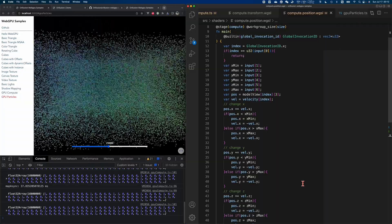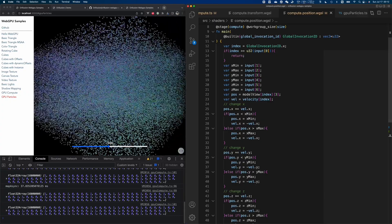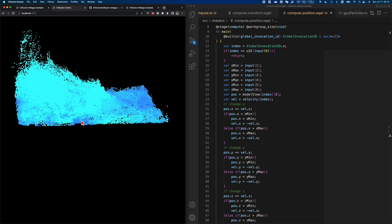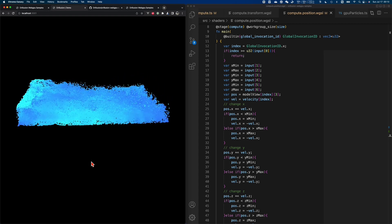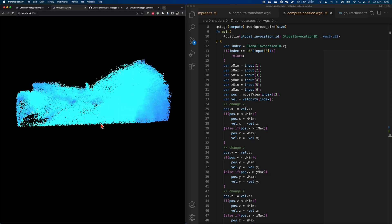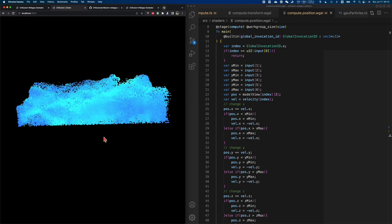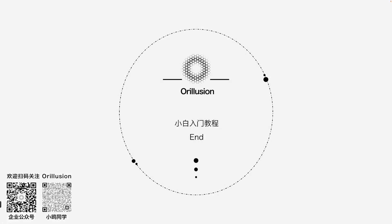This is a typical compute pipeline. In real projects, it may require dozens or even hundreds of compute pipelines in series — for example, to simulate complex physical processes — using storage buffers to share data between pipelines, with the CPU only responsible for process control or mouse and keyboard interaction. Alright, that is all for today's tutorial. Please feel free to download the GitHub repo and run the examples. This is also the last video in our WebGPU fundamentals tutorial series. Thank you for your attention and company over the past few months. Our Orillusion WebGPU engine is about to be published — welcome to subscribe to our channel, and I will see you next time.